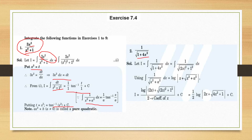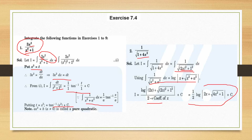Question 2: integral of 1/√(1 + 4x²). Take 4 outside, or write it as 1/√((2x)² + 1). Applying the log formula directly: remember to divide by the derivative of 2x, which is 2. So the answer is (1/2) log|2x + √(4x² + 1)| + C. Alternatively, take 4 outside first to get the form (1/2)² + x² and apply the formula.